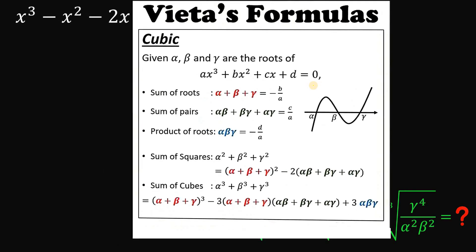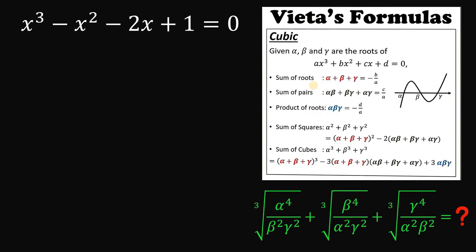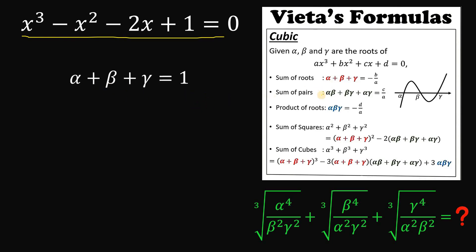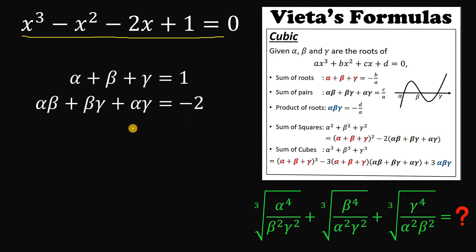Using those concepts we will answer this question. Given this cubic equation and applying Vieta's formula: alpha plus beta plus gamma equals negative of negative 1 over 1, which is positive 1. The sum of pairs alpha·beta plus beta·gamma plus alpha·gamma equals negative 2 over 1, or simply negative 2. The product of the roots alpha·beta·gamma equals negative 1 over 1, which is negative 1.